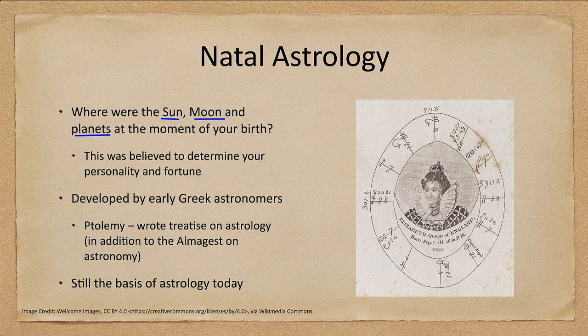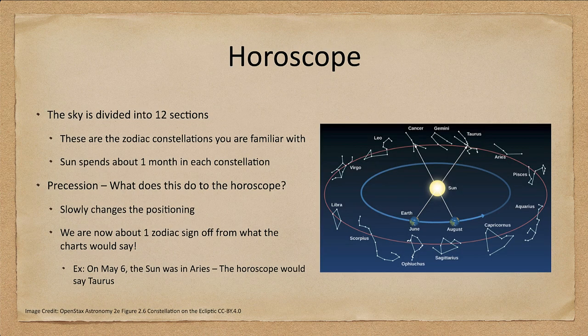We talked about Ptolemy's Almagest in astronomy, but he also produced a similar work on astrology. This shows that very early on there was not a big difference between astronomy and astrology — they were very closely tied together.